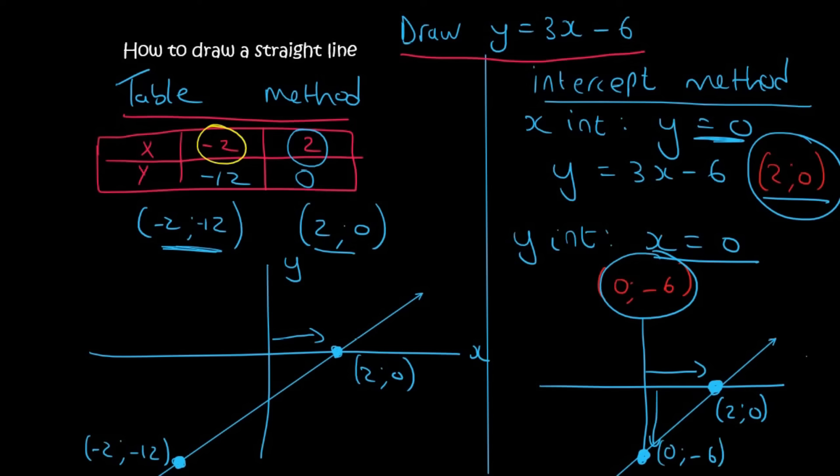The numbers on the graphs are going to be different, but I promise you they are actually the same line. And there you have it — the table method and the intercept method. Thanks for watching.